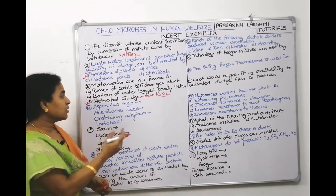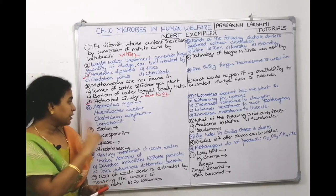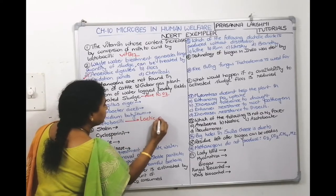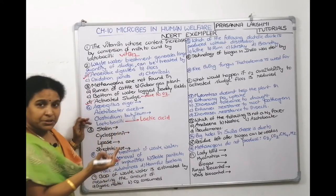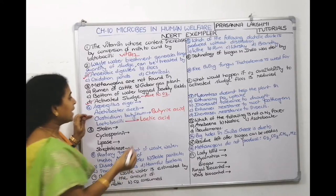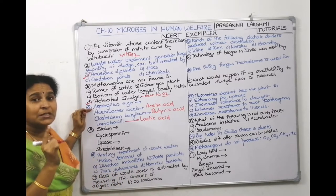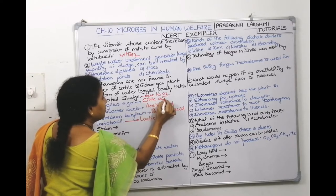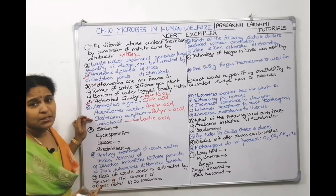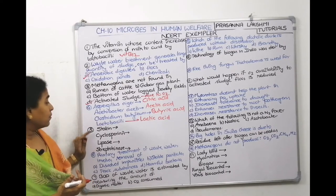Next, match the following: Aspergillus niger — which acid? Acetobacter — which acid? Clostridium butyricum — which acid? Lactobacilli — which acid? Lactobacilli produces lactic acid. Clostridium butyricum produces butyric acid. Acetobacter aceti produces acetic acid. Aspergillus niger, which is a fungus, helps in production of citric acid.